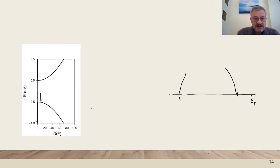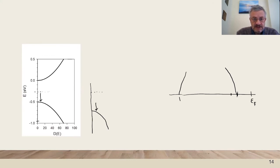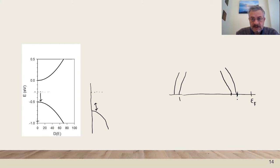If there is a shift of the energy level — which can happen in several ways — then this is going to be reflected in the UPS spectrum, because there will be a displacement here, and there will also be a displacement of the final cutoff. So we can observe this change in the surface.